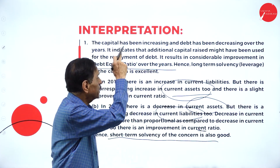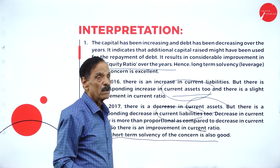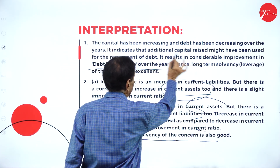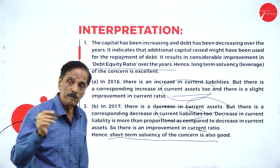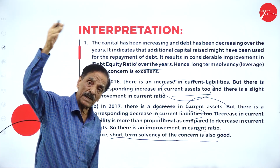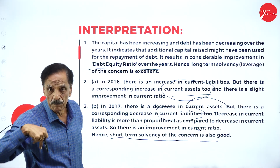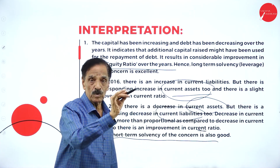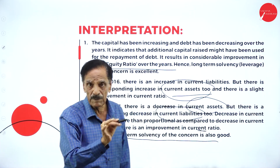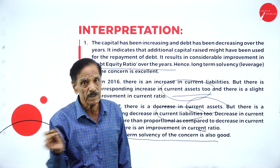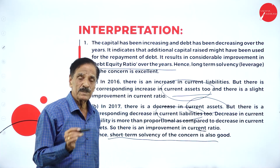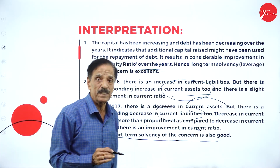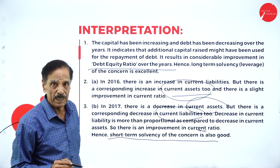So this interpretation — the debt being repaid out of the raised funds is a good trend. Current ratio is current assets divided by current liabilities. Current liabilities are also called regular liabilities, and regular current assets are there.